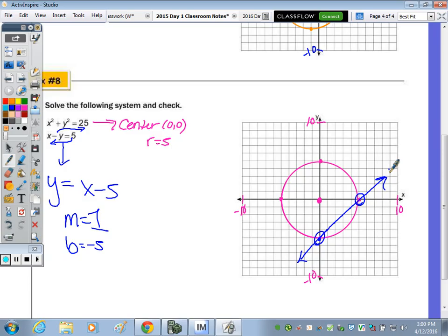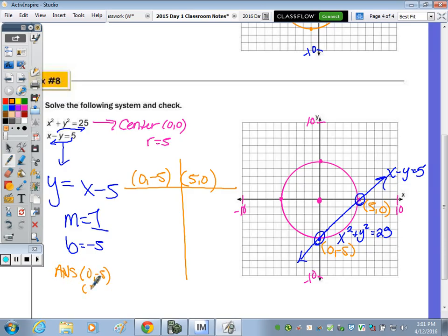When given a system, you should label. So x minus y equals 5. And x squared plus y squared equals 25. So the two points to check are 0, negative 5. That's this point right here. And 5, 0. You have to put parentheses around your solutions. Or else you'll lose credit. So the answer is 0, negative 5, 5, 0.